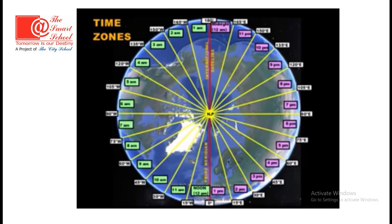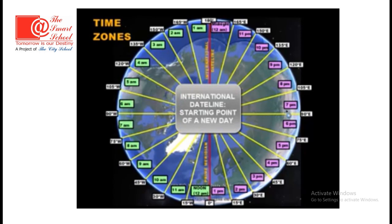The last point: the international date line at 180 degrees is the main starting point of the new day. As you can see, the time zone at the international date line has reached midnight, and midnight starts a brand new day — let's say Monday. But as we move back through time zones, the next zone is still experiencing 11 p.m. Sunday night, then 10 p.m., then 9 p.m., down to noon on Sunday near the prime meridian, and even through the U.S. at 5, 6, or 7 a.m. Sunday morning. The international date line is the starting point of the brand new day, and every single time zone behind it is still in the previous day.